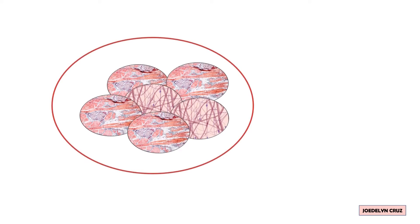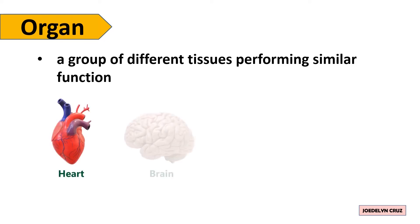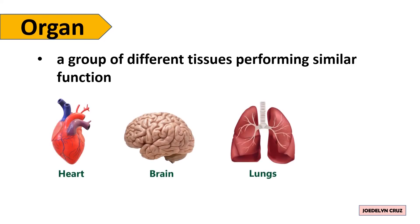When different tissues work together, they make an organ. An organ is a group of different tissues performing a similar function. Examples of organs are heart, brain, lungs, and eye.